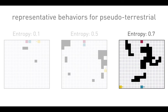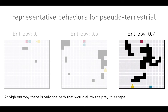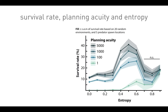At entropy 0.7, things are very interesting — we go back to behaviors very similar to the low-entropy case, but now because there's really only one or two paths to get to safety. So we have again highly stereotyped behaviors. Now let's look at survival rate, planning acuity, and entropy. Entropy level is on the x-axis, survival rate on the y-axis, and the different colored lines are different levels of planning acuity.